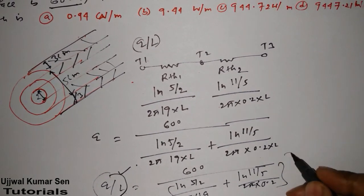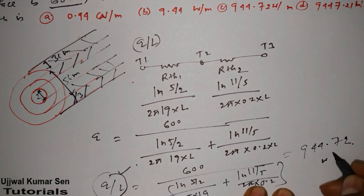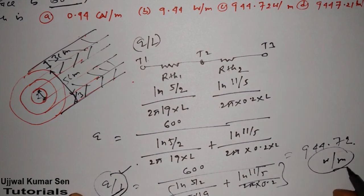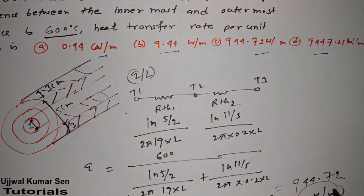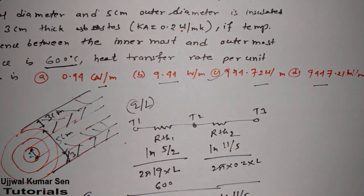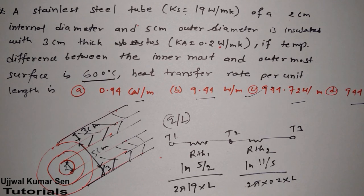After calculation, we get Q/L ≈ 944.72 W/m. The units match what is given in the options, so option C is the right answer. This is how you can solve such problems in any examination — GATE, university exams, or any competitive exam. I hope you understand the concept. Thanks for watching, see you soon in my next video, bye bye.